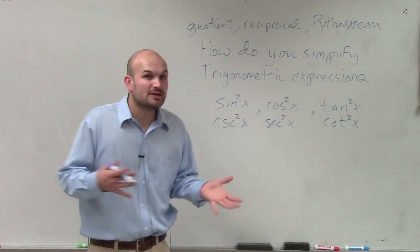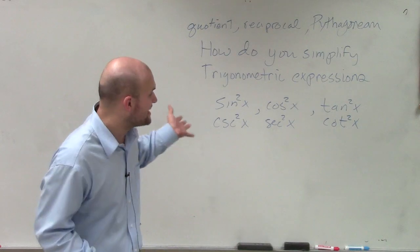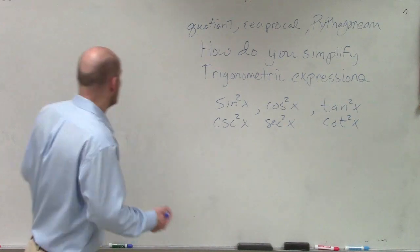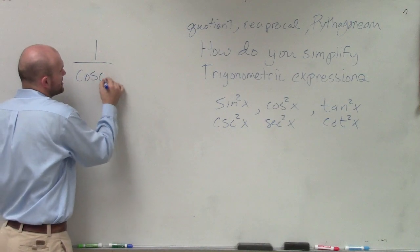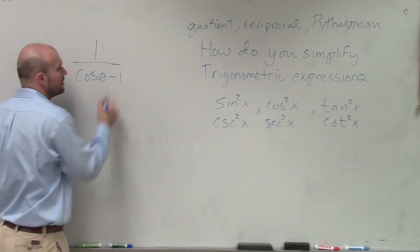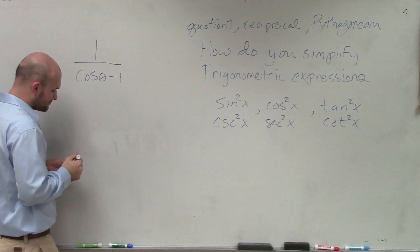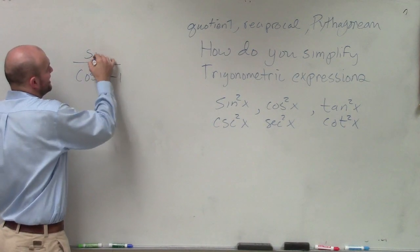Also, try looking for opportunities to create a sine squared, cosine squared, and so forth. For instance, if I have 1 over cosine of theta minus 1, well, if I go ahead and simplify this, I don't know, let's do sine or something. I'm just totally making something up.